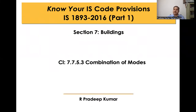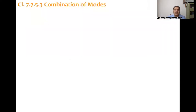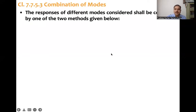Clause number 7.7.5.3. Section 7 is on buildings, 7.7 is on dynamic analysis, subsection 5 is on response spectrum analysis, and 3 is the combination of modes - that means 7.7.5.3. The code says these response quantities of different modes considered shall be combined by using one of the two methods given below.